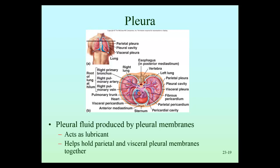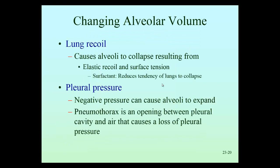Looking at factors that affect these pressures: number one, lung recoil. When you think of recoil, think of pulling a spring apart — it recoils backward to its resting state. The same thing occurs with the connective tissue within the lungs; it tends to want to move inward. Things that cause the lungs to move inward and prevent their expansion are elastic recoil and surface tension. Surface tension occurs because water droplets lining the alveoli want to form one complete drop — water tends to stick together, and that would cause the alveoli to collapse. So elastic recoil and surface tension both promote the lungs to collapse.